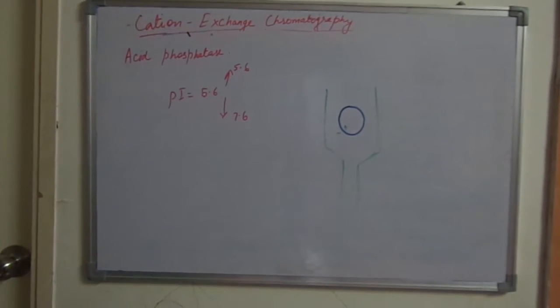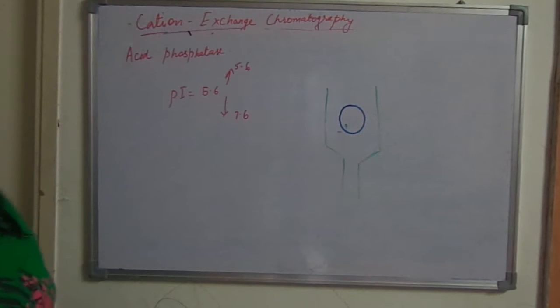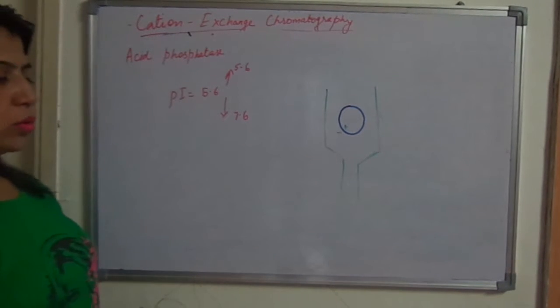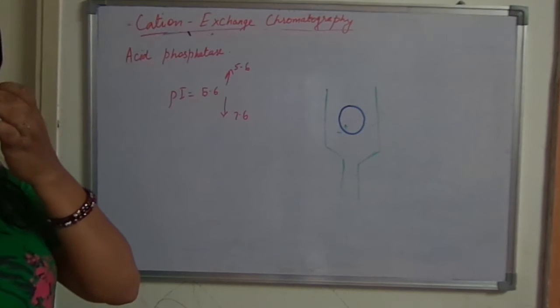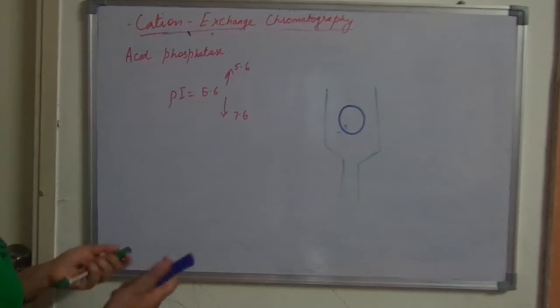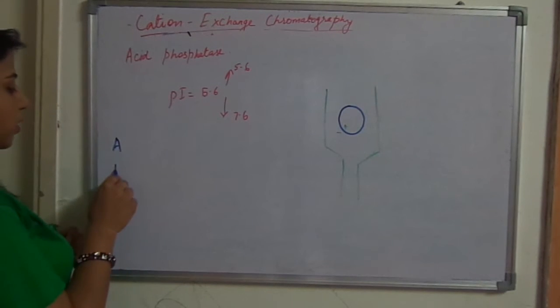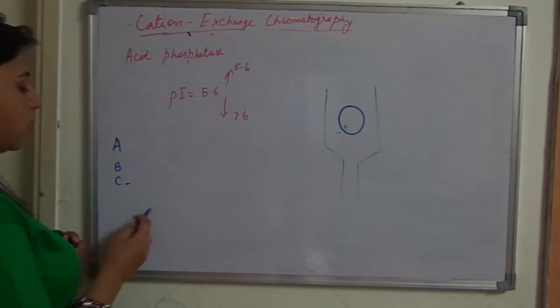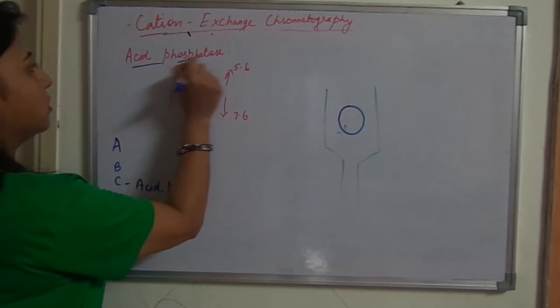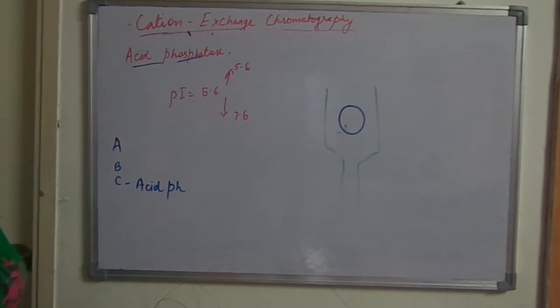Okay, in the last video I spoke about anion exchange chromatography and now I will talk about cation exchange chromatography. One important point about chromatography - let's take the enzyme mixture, say ABC is the enzyme mixture that you are having and among these, C is acid phosphatase. This enzyme is there, C is acid phosphatase.